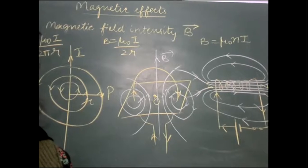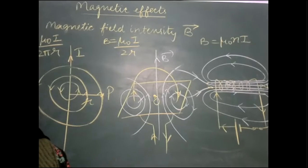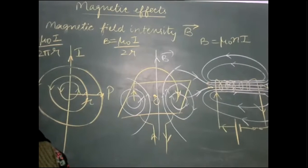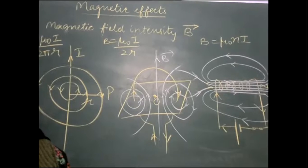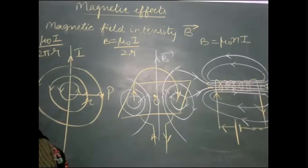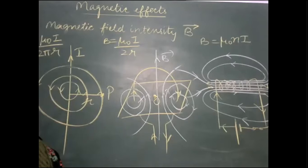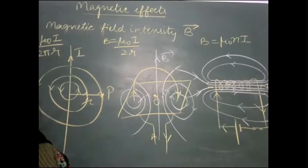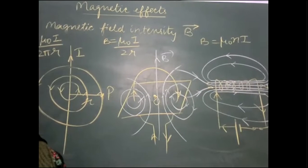There are two expressions for magnetic force: F = qvB sinθ for a moving charge in a magnetic field, and F = BIL sinθ for a current-carrying conductor placed in a magnetic field. The magnetic Lorentz force is maximum when θ = 90° and is zero when θ = 0° or 180°, meaning the charged particle passes undeflected.